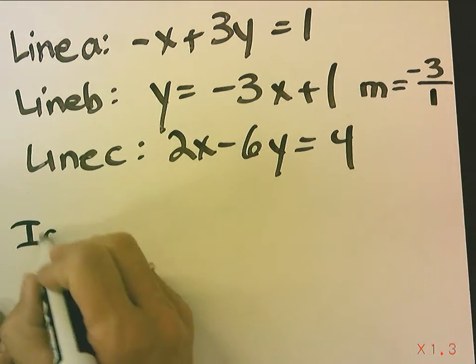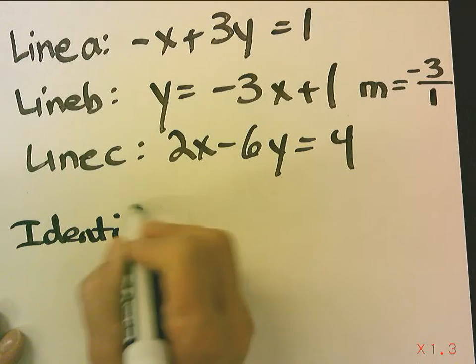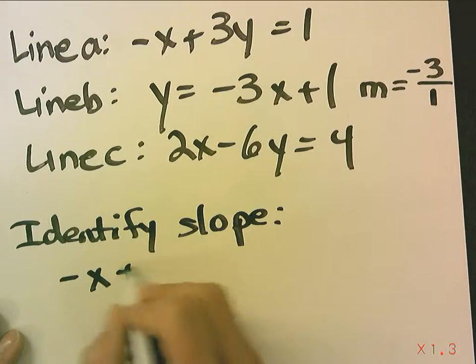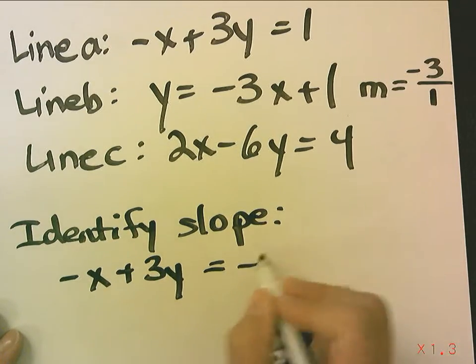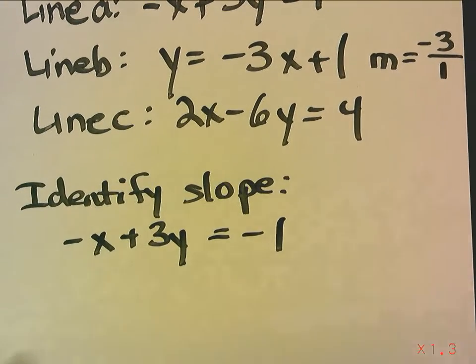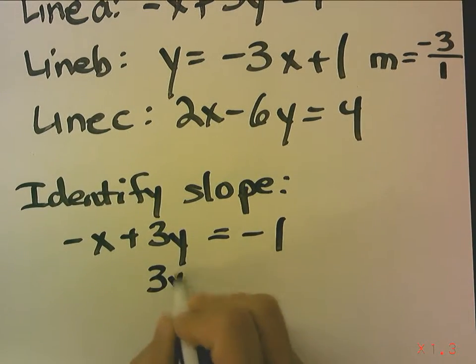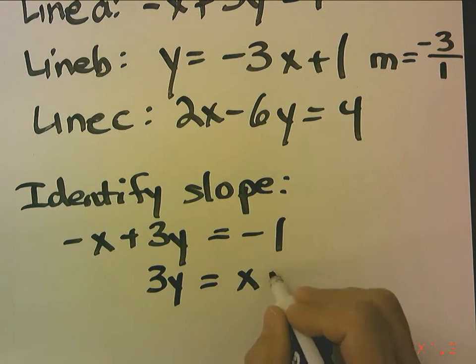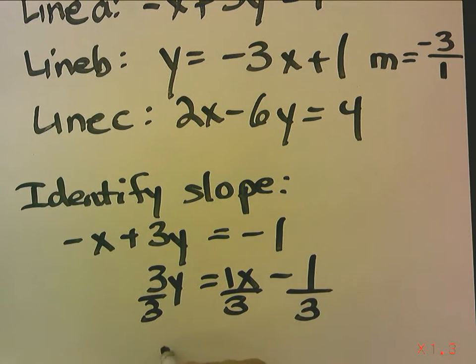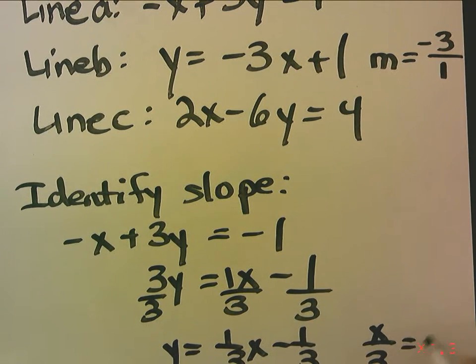But to identify the slope of line A, we're going to change this, which is not in any form, into slope-intercept form. So to do this, I'm going to isolate y by adding x to both sides, and then I'm going to divide by 3. So here, I get y equals 1 third x minus 1 third. Notice, x over 3 is the same as 1 third x.